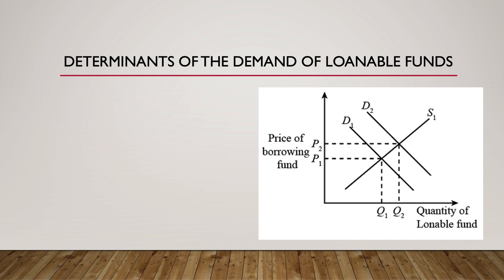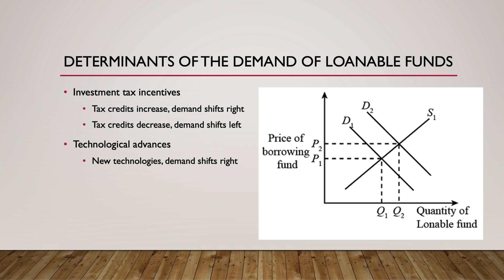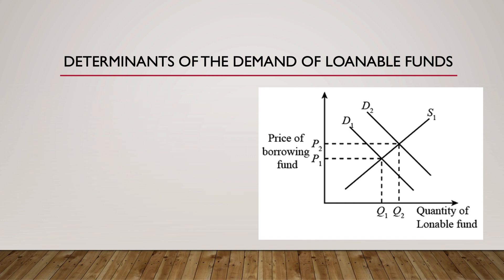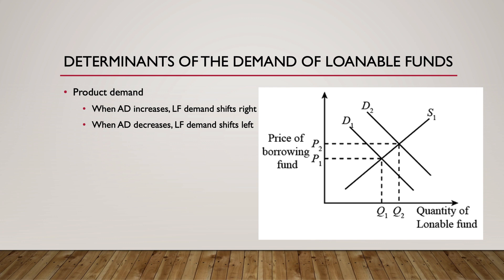Now let's look at the determinants of the demand for loanable funds. The first is investment tax incentives. Investment tax credits effectively reduce tax payments for firms building new factories or buying new equipment. Such policies increase the after-tax rate of return on capital, which encourages businesses to borrow, illustrated graphically as a rightward shift in the demand for loanable funds. New technologies increase productivity and provide businesses with an incentive to increase production, which also increases demand for loanable funds. Increased government regulations make production more costly for firms, reducing their demand for loanable funds because the return on business investment is reduced. When the demand for goods and services increases, this causes the price level to rise, incentivizing firms to increase productivity and their demand for loanable funds. When firms' sentiments about the economy rise, firms tend to increase their investment demand, and so the demand for loanable funds increases.